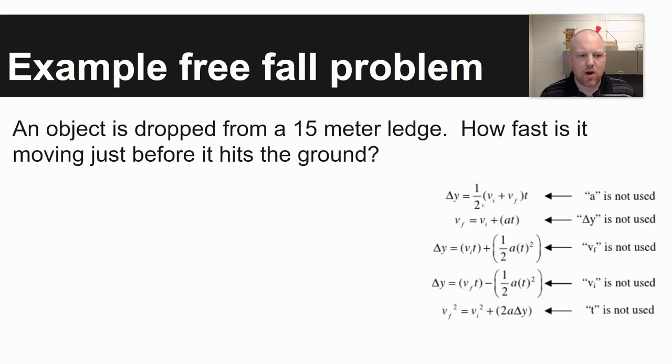So there's just one problem I wanted to go through to demonstrate some of these things and just to go through the math. It says here an object is dropped from a 15 meter ledge. How fast is it moving just before it hits the ground? Right before something hits the ground, the answer should not be zero for a final velocity if something's dropping. So it's that instant before an object hits the ground.